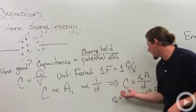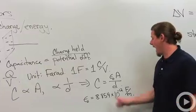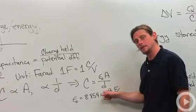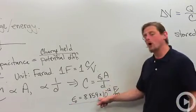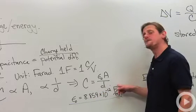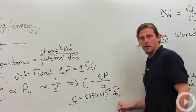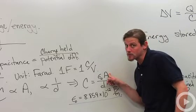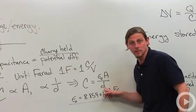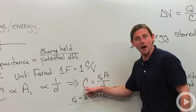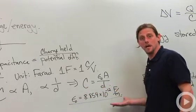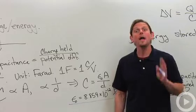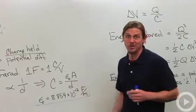We can write the capacitance of a parallel plate capacitor as a constant times the area divided by the distance between the plates. This constant has a numerical value of 8.854 × 10⁻¹² farads per meter. If you take that constant, multiply by meters squared for area, and divide by meters for distance, you get farads — so it's farads per meter. This is called the permittivity of free space, and it plays a major role in more advanced discussions about capacitors and electric fields.